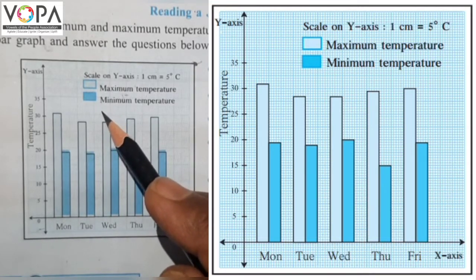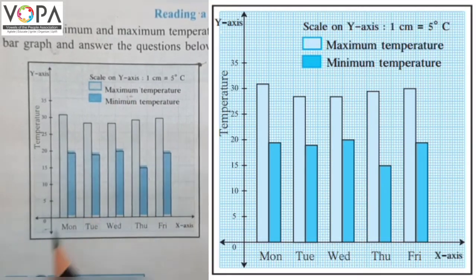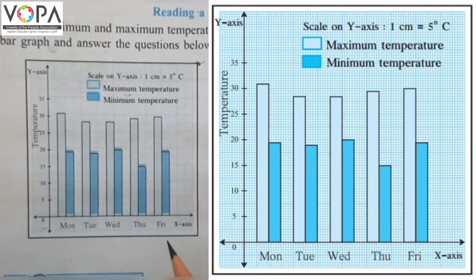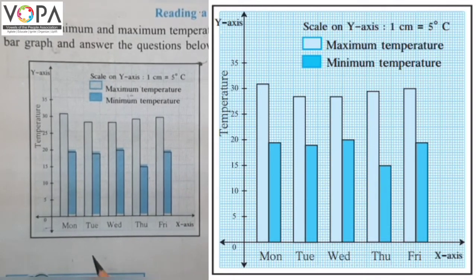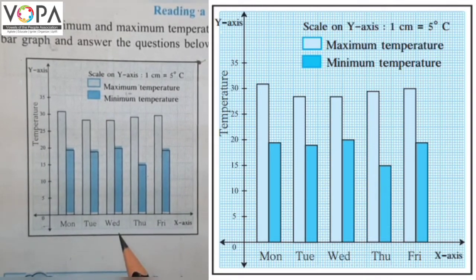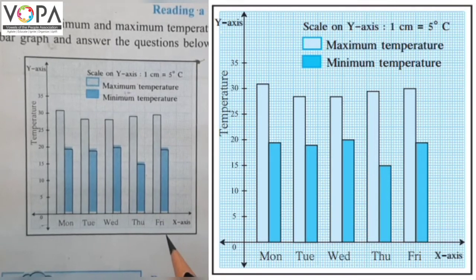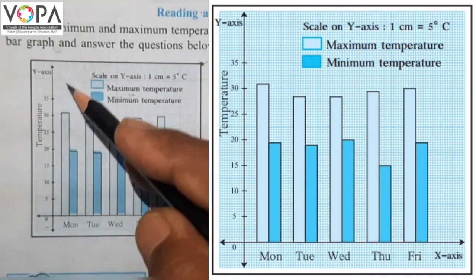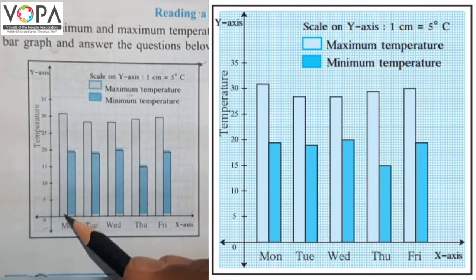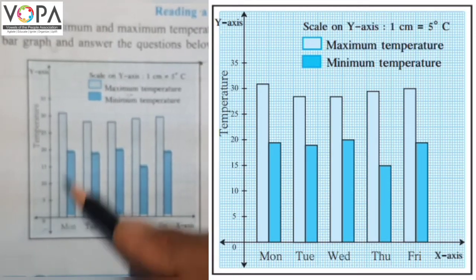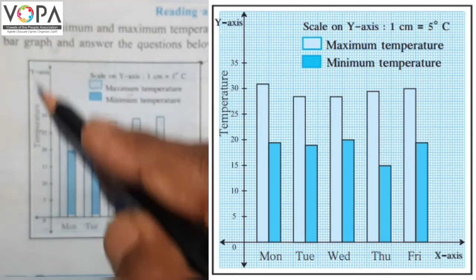On the x-axis there are dates of the week — that is Monday to Friday: Monday, Tuesday, Wednesday, Thursday, and Friday. And on the y-axis, 1 centimeter is equal to 5 degrees Celsius; that is, temperature is shown on the y-axis.